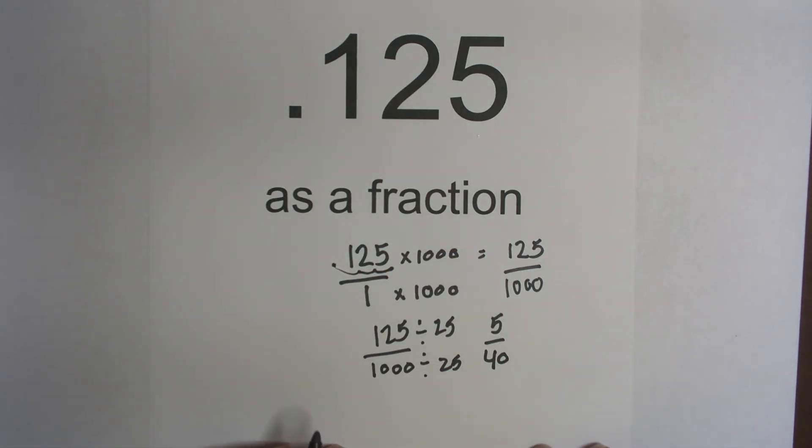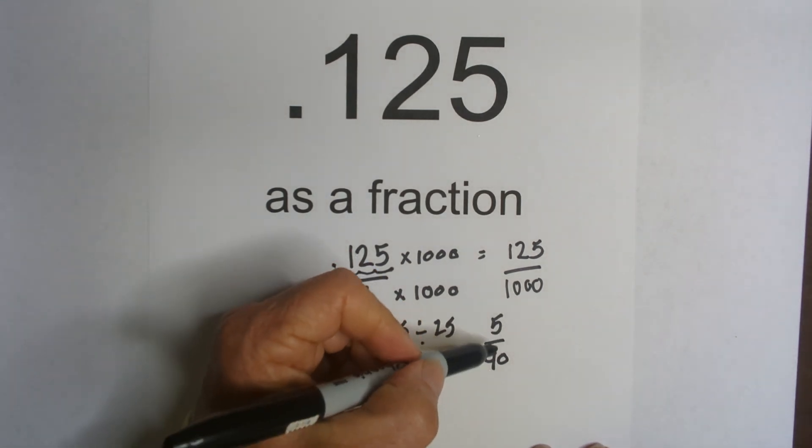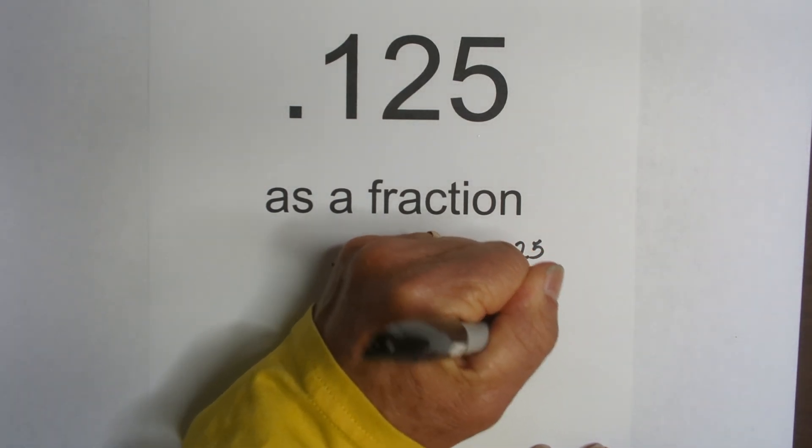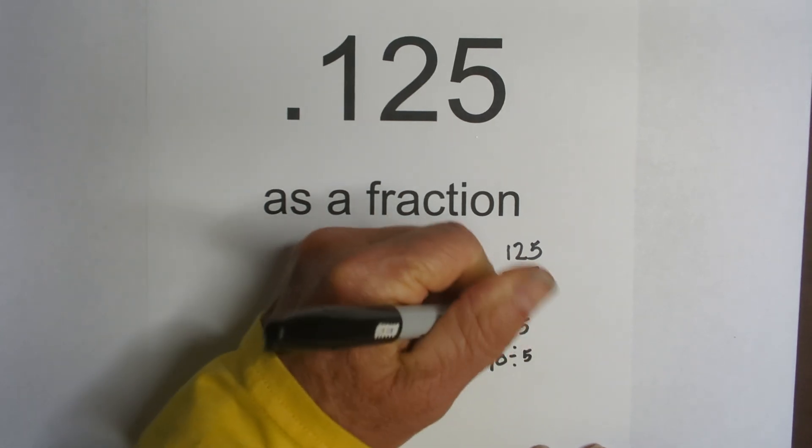But I'm not finished yet because I know 5 goes into 40. So I'm going to divide numerator and denominator by 5.